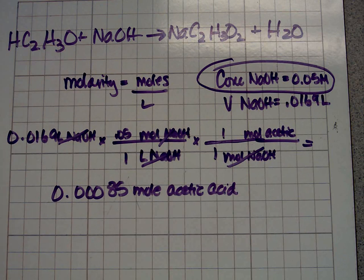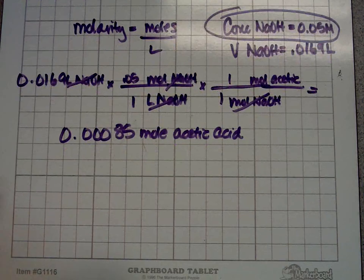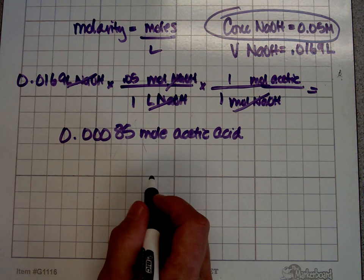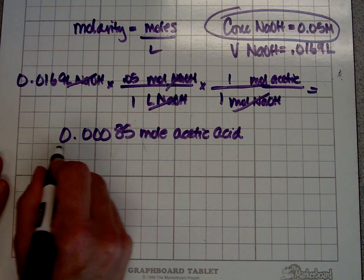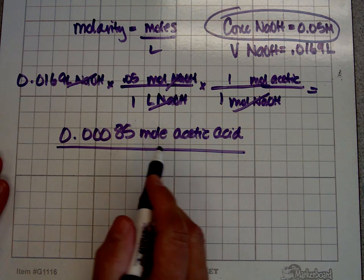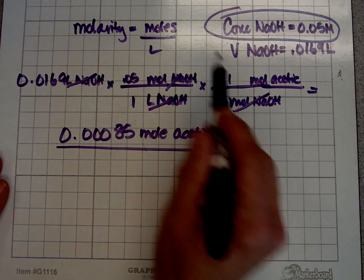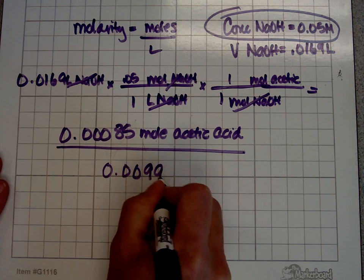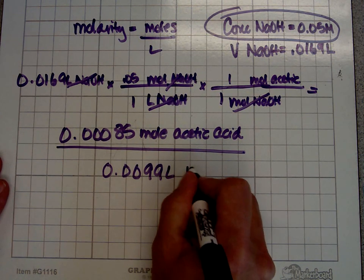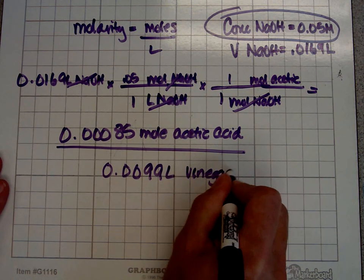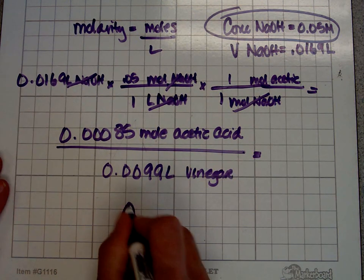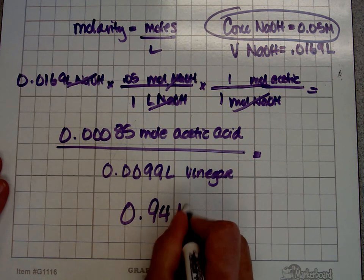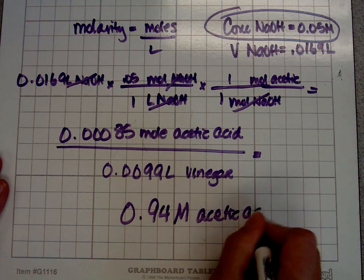Now we were asked to calculate concentration of acetic acid. When we want to calculate concentration, it's moles per liter. So all you do is divide this by the number of liters of vinegar that we used. We used 0.0099 liters of vinegar. When you divide those two numbers out, you have 0.94 molar acetic acid. And that's your concentration.